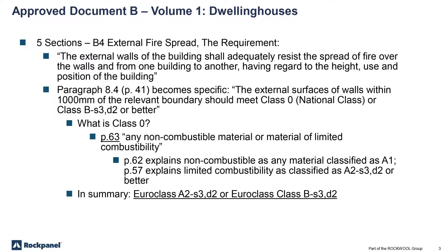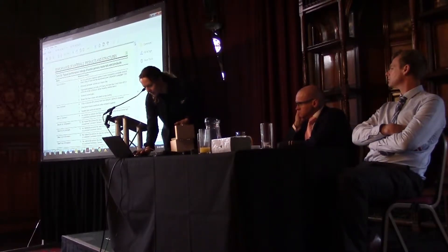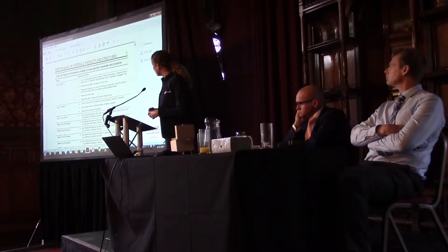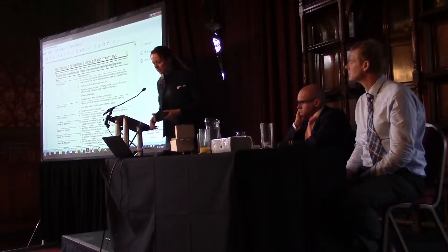We wouldn't be wrong thinking that this might be the volume to go to if we're looking at a re-clad of a tower block, because there are dwellings in it. Questions arising from this are: what's Class O? Chris and Martin have already covered that. And also, what is this Euro Class B, S3, D2? If we go to Class O, we have to jump to page 63 — bearing in mind this is an 84-page document. Class O is defined as any non-combustible material or material of limited combustibility. That doesn't really quite explain it; we need to go deeper into the document.